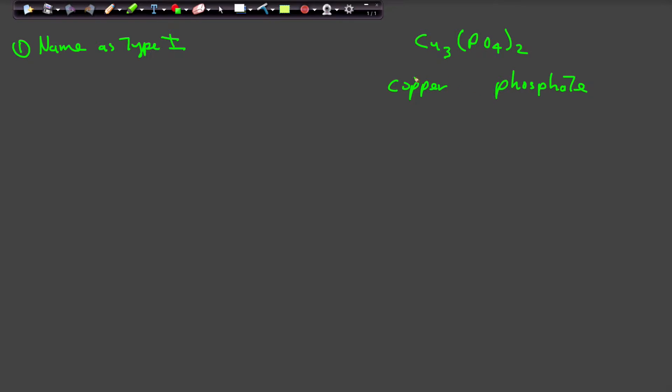Okay, this compound is now named as a Type 1 name. The second thing you want to determine is you want to identify the true type of the compound.